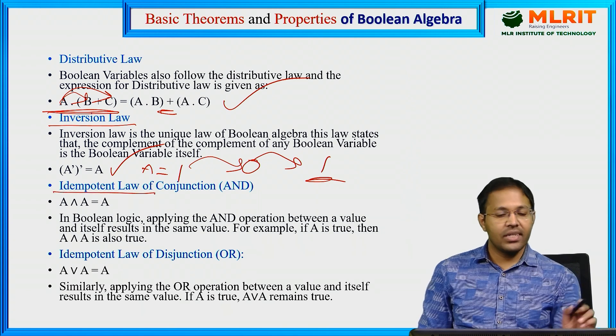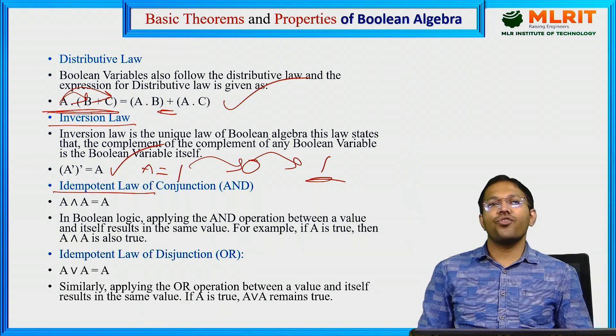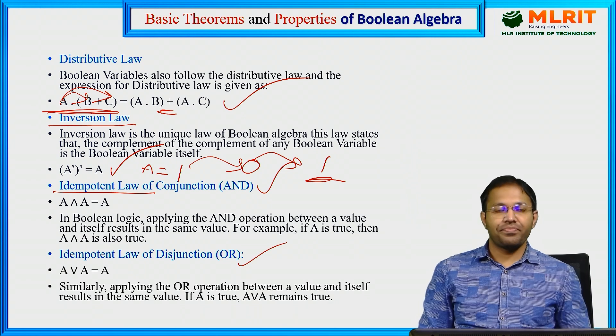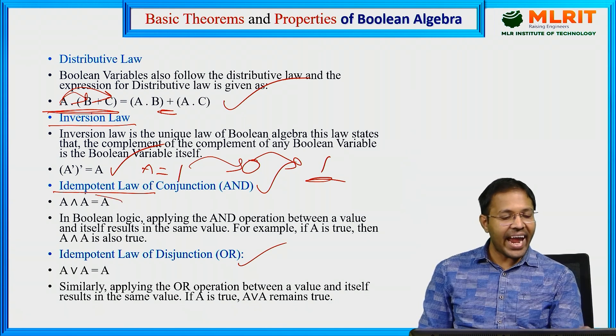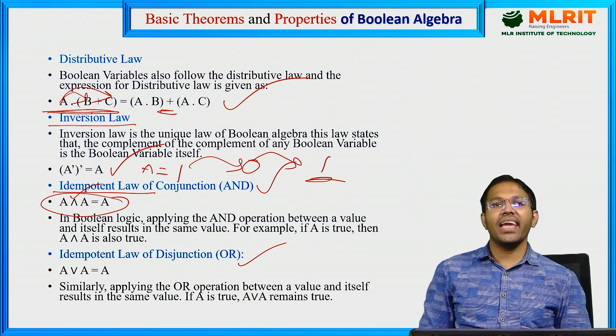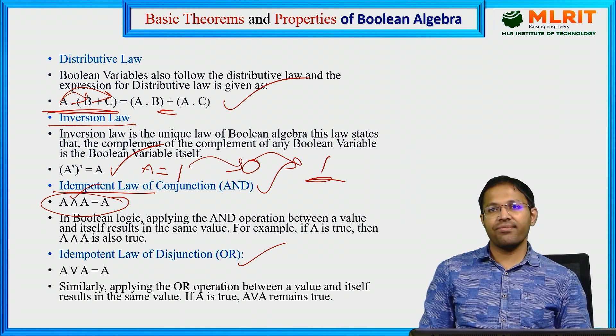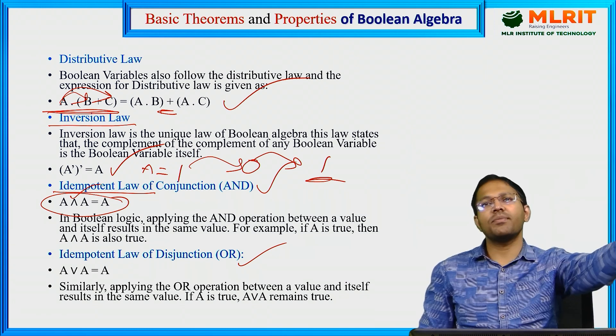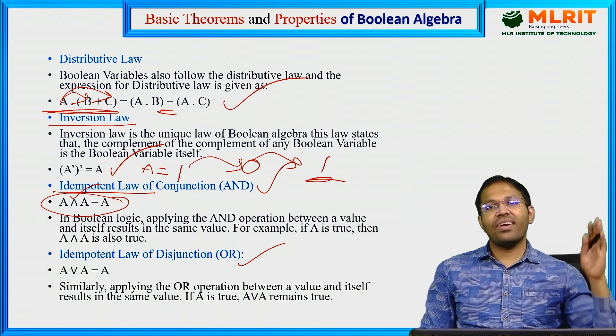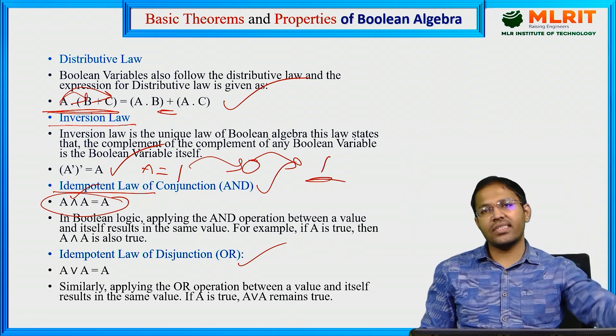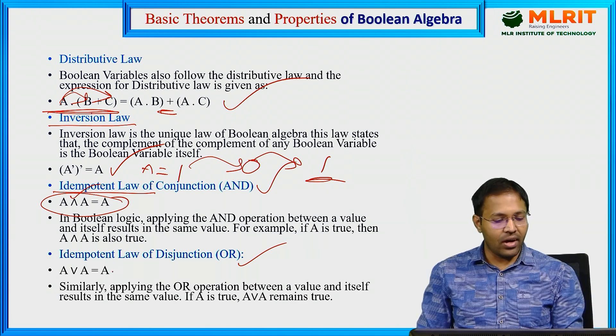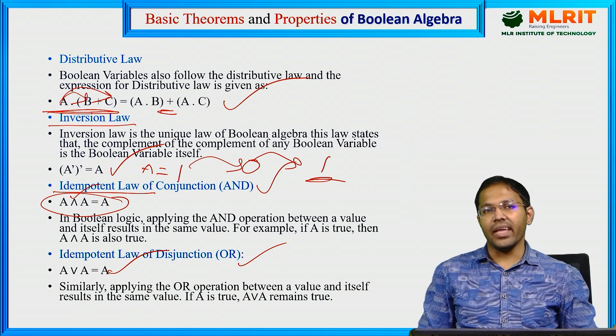Next, Idempotent Law. Again we have two categories, one is for AND, another is for OR. Here A AND A, this is the symbol for AND. A AND A gives us A. Suppose if I say Suresh and Suresh meet me, it is only one Suresh that meets me. Likewise, if I say Suresh OR Suresh, there is only one Suresh. A OR A is again A.